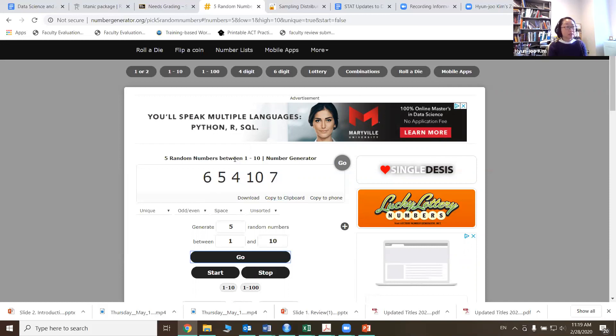So to calculate that, I have my handy dandy calculator. So I'm going to add six plus five plus four plus 10 plus seven, which is 32, and divided by five, it will be 6.4. And so on and so on. You can do it multiple times.